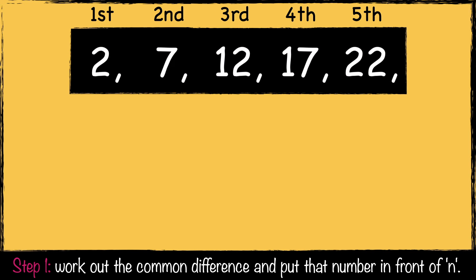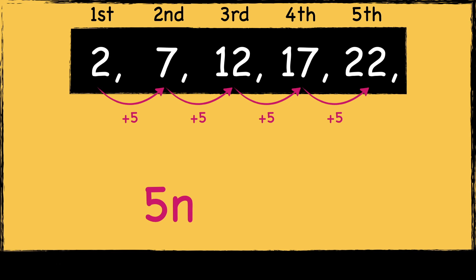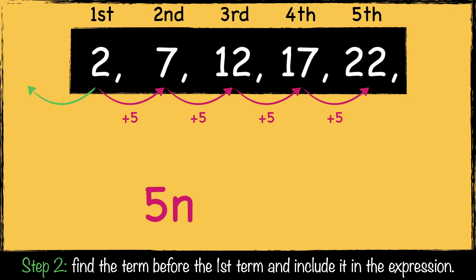Here's the next sequence: 2, 7, 12, 17, 22. First, we need to work out the common difference. In this sequence, we're adding 5 to each number, so the first part of this expression is 5n. As this sequence is adding 5 each time, we need to subtract 5 to find the previous term. So 2 take away 5 is minus 3. So the nth term expression for this sequence is 5n take away 3.